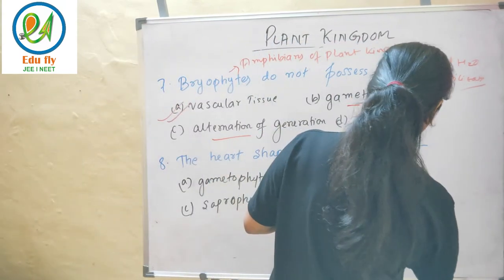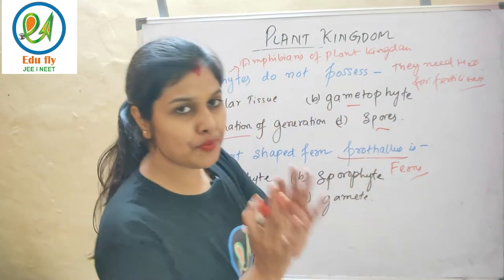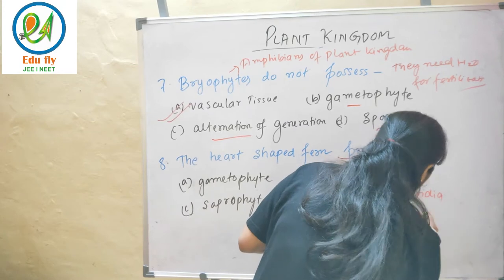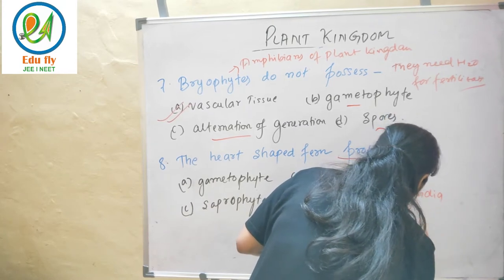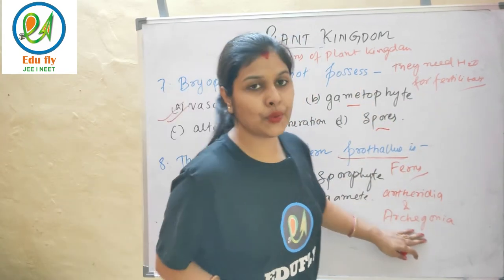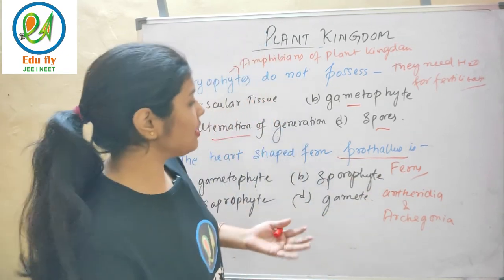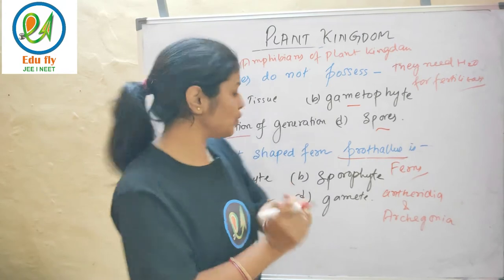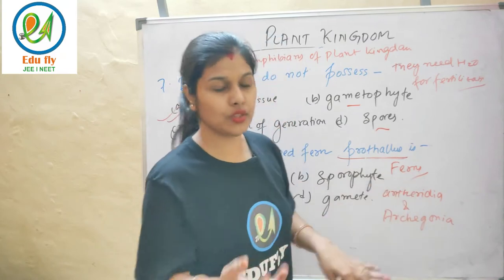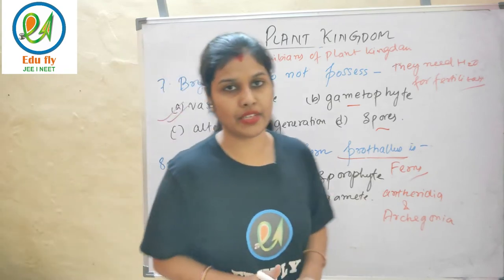The heart-shaped prothallus is the characteristic feature of ferns. The prothallus contains antheridia and archegonia — antheridia are male gametes and archegonia are female gametes — both enclosed inside the prothallus. So the prothallus is the gametophyte of ferns.